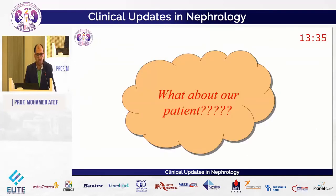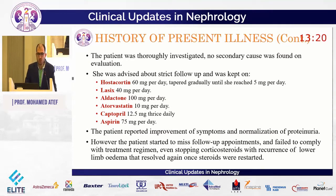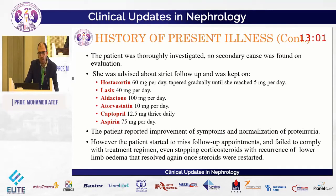Back to our patient: she was thoroughly investigated for the primary cause; however, no secondary cause was found. She was started on steroids titrated up to 5 mg per day, diuretics — Lasix 40 mg per day and Aldactone 100 mg per day — adjusted according to clinical response, atorvastatin 10 mg per day, captopril 12.5 mg twice daily, and aspirin 75 mg per day.